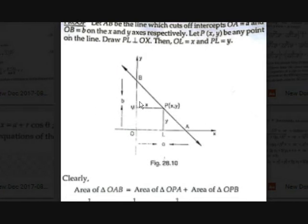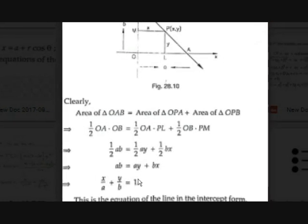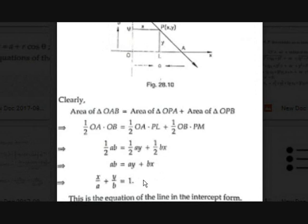So we get (1/2)ab = (1/2)ay + (1/2)bx. All halves cancel out, giving ab = ay + bx. Sending ab to the other side, we divide through by ab: bx/ab + ay/ab = 1, which simplifies to x/a + y/b = 1.